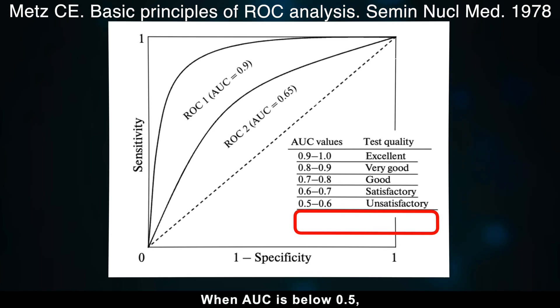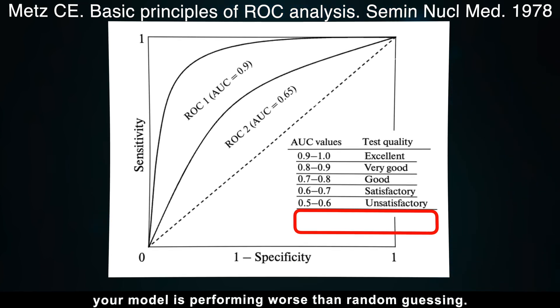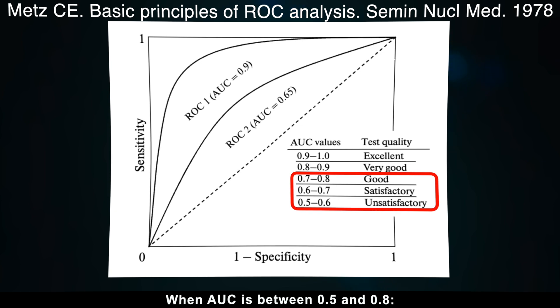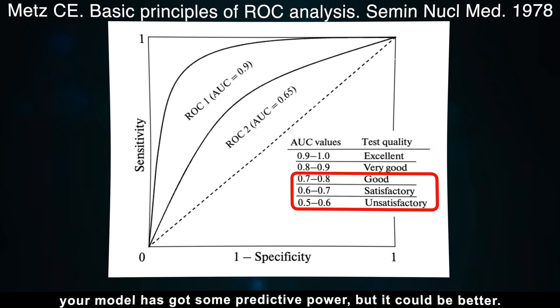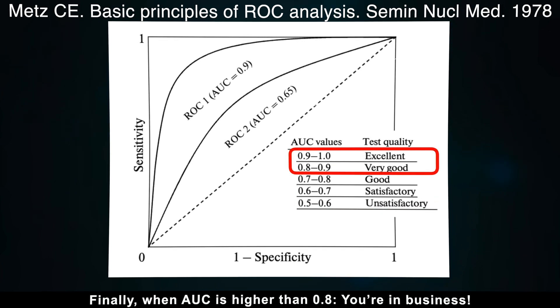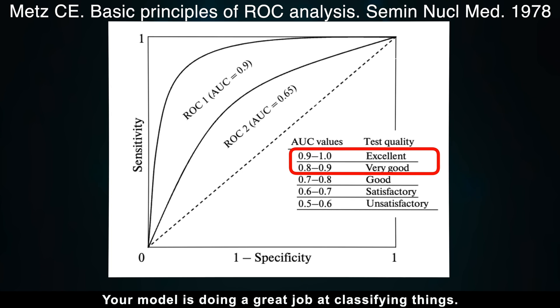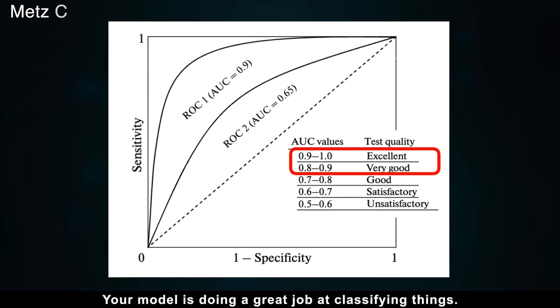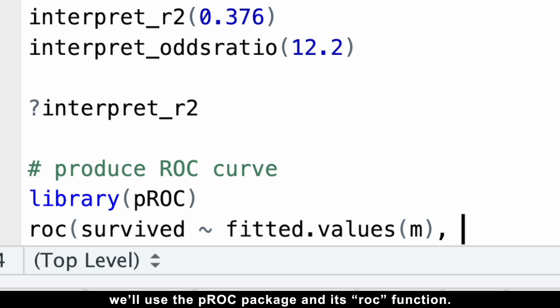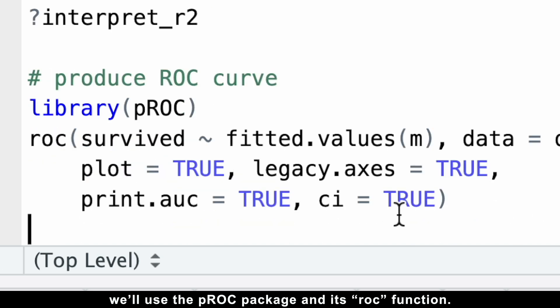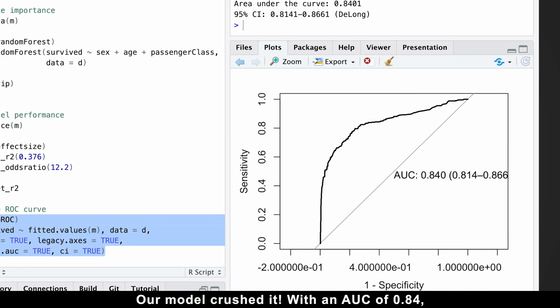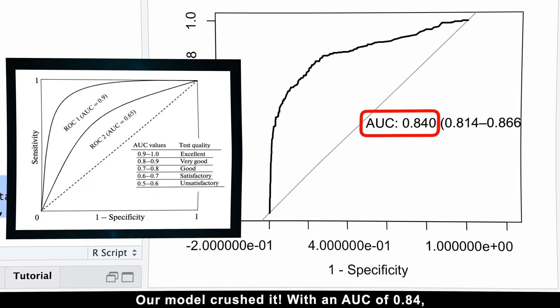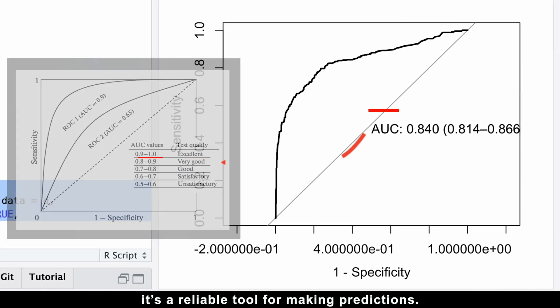When AUC is below 0.5, your model is performing worse than random guessing. Time to rethink. When AUC is between 0.5 and 0.8, your model has got some predictive power, but it could be better. Finally, when AUC is higher than 0.8, you're in business. Your model is doing a great job at classifying things. To create a ROC curve, we'll use the pROC package and its roc function. Just feed it the actual outcomes and your predictions and let the magic happen. Our model crushed it. With an AUC of 0.84, it's way better than just guessing. This means it's a reliable tool for making predictions.